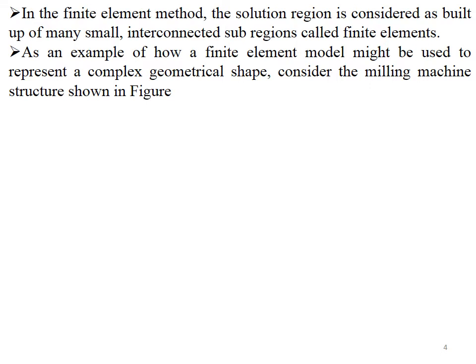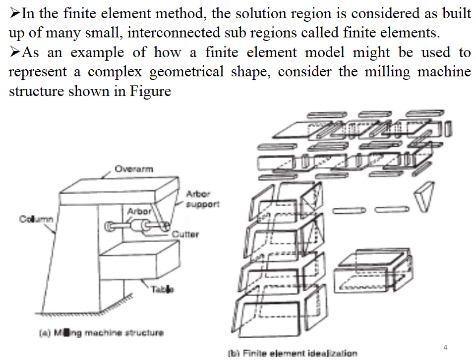As an example of how the finite element model might be used to represent a complex geometric shape, we consider a milling machine as shown in this figure. In figure A, we can see a milling machine — this is a complex structure. We are dividing it into different parts; we are splitting it and each part is called an element. This complex structure is divided into many simpler elements to make problem solving easier. This is how we create a finite element model.